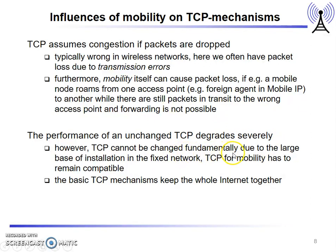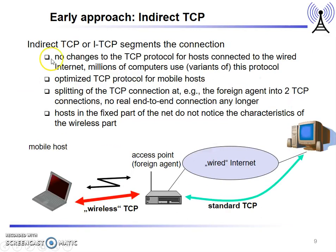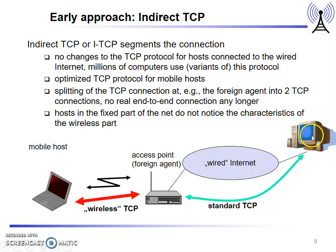The performance of standard TCP degrades severely in mobile networks. TCP cannot be changed fundamentally due to the large base of installation in fixed networks, as the basic TCP mechanism keeps the whole internet together. One classical protocol is indirect TCP, also known as i-TCP, which segments the connection. There is a standard TCP connection between the access point and the desktop system, and another connection between the mobile host and the access point, but this setup is invisible to the mobile host.